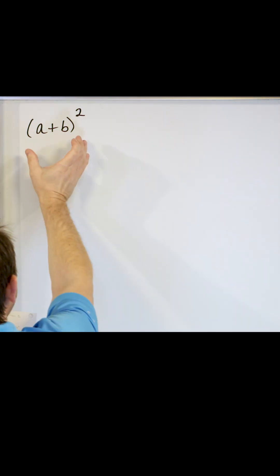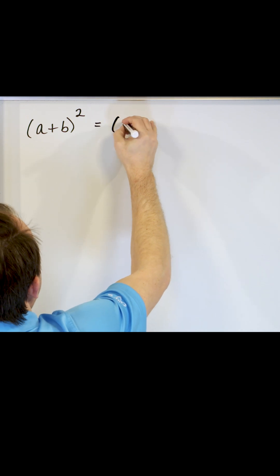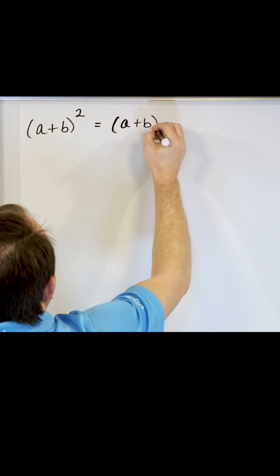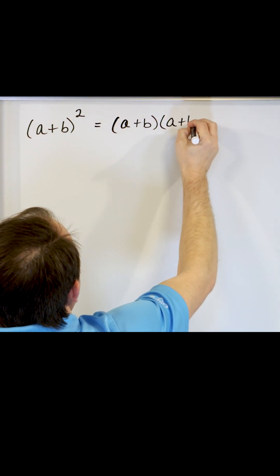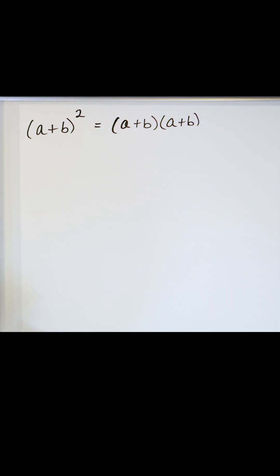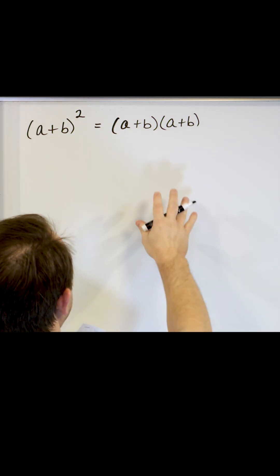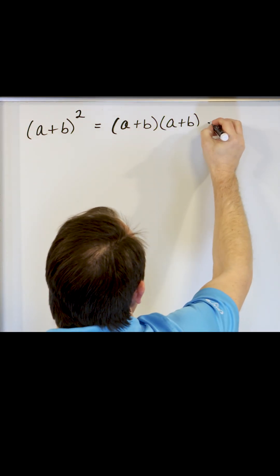So a plus b squared just means the entire quantity a plus b multiplied by a plus b. In other words, it's multiplied by itself and there's two of them here because it's squared. So of course, you don't need to memorize the special formulas here. What you need to do is just know how to handle everything by hand.